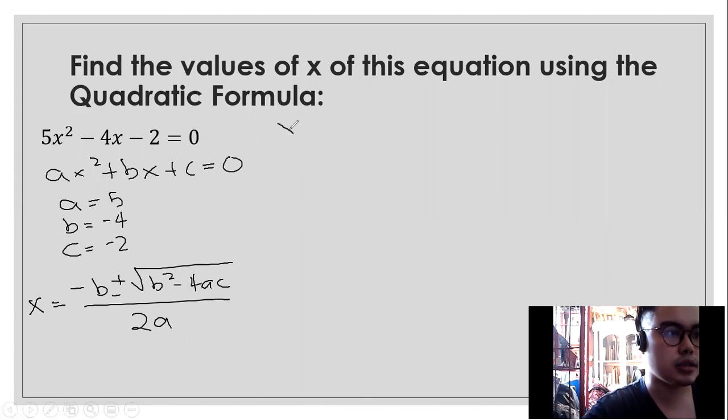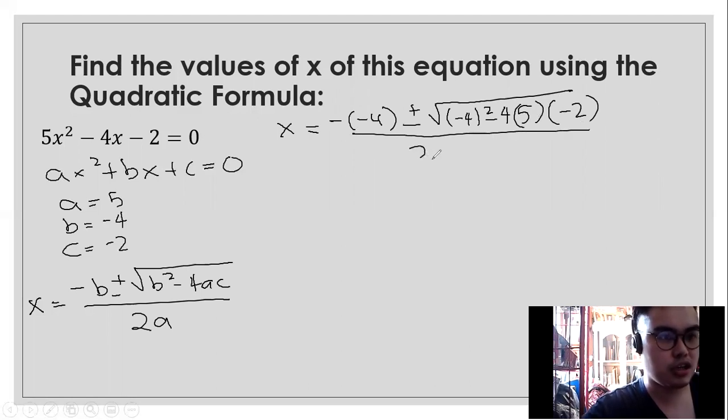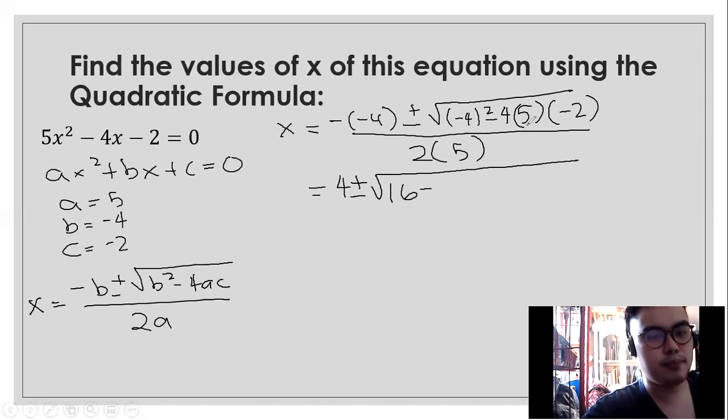What we're going to do next is substitute. Ay, oo nga pala, may nakalimutan pala ako. Yung b natin ay magiging negative 4 dahil equals siling dalawa. Then, your a will be 5. Then, your c will be negative 2. Here again sa denominator na 2a, your a will be 5. Negative times negative is positive. So, it will be 4. Double negation to. Then, negative 4 squared. Since yung negative 4 ay nasa loob ng parentheses, negative 4 times negative 4 is 16. Now, we're going to multiply 4 times 5 is 20. Then, 20 times negative 2 is negative 40.